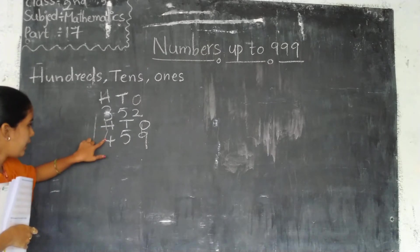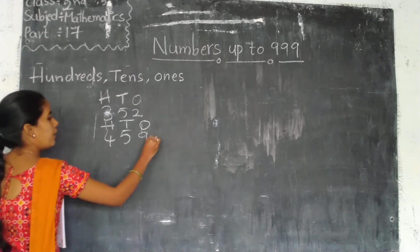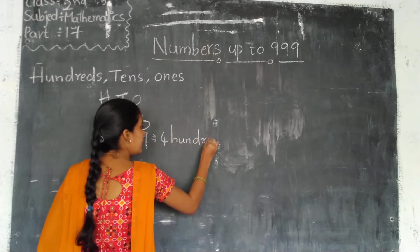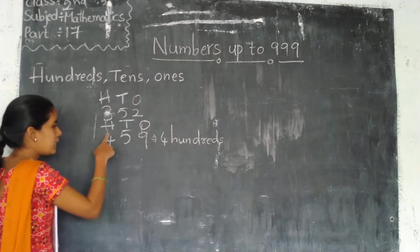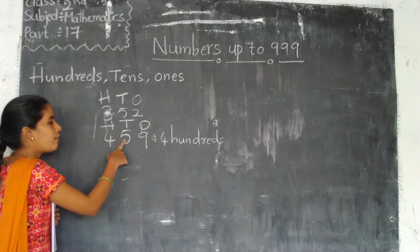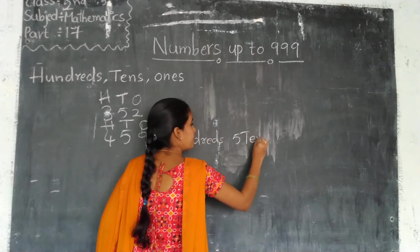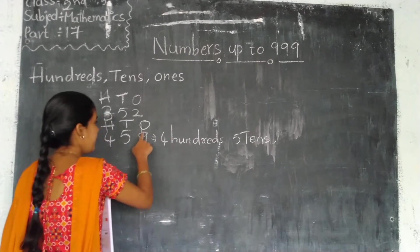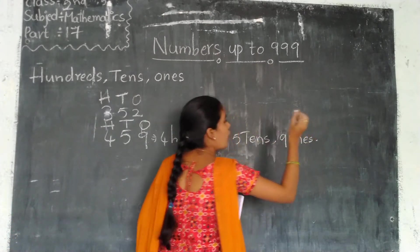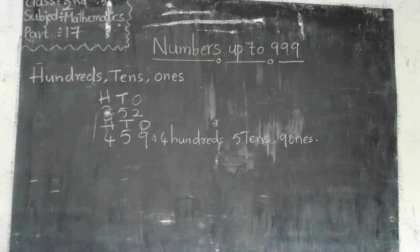How to write place values? Four hundreds, five tens, nine ones. How can we read it? In the hundreds place, four is there — so four hundreds. In the tens place, five is there — so five tens. And nine ones. Here we have some picture format, let's see.